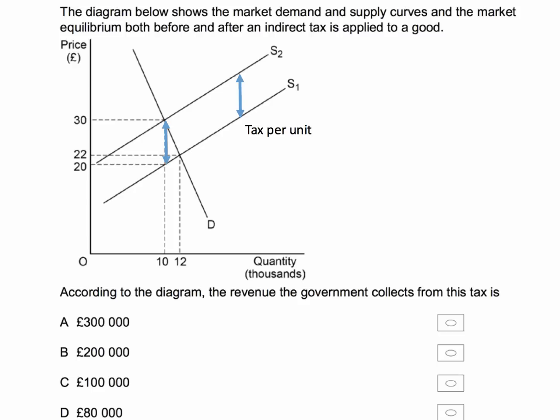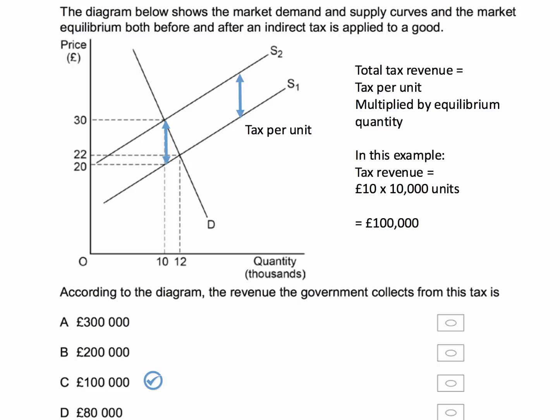This is going to help us answer the question: how much revenue does the government collect in tax? Total tax revenue is tax per unit multiplied by the equilibrium quantity. The tax per unit is £10 and the equilibrium quantity after the tax is 10,000 units. So in this example, tax revenue is £10 per unit times 10,000 units, which equals £100,000 — giving the correct answer C.